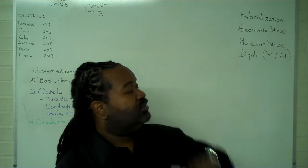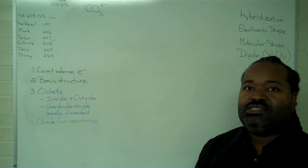This video shows how to do a Lewis structure and extract information from it. In this case, we're going to be using the carbonate ion, CO3 2-.